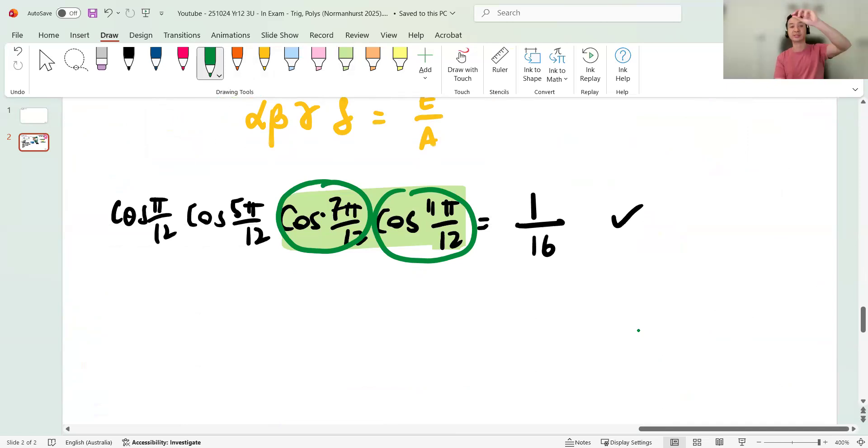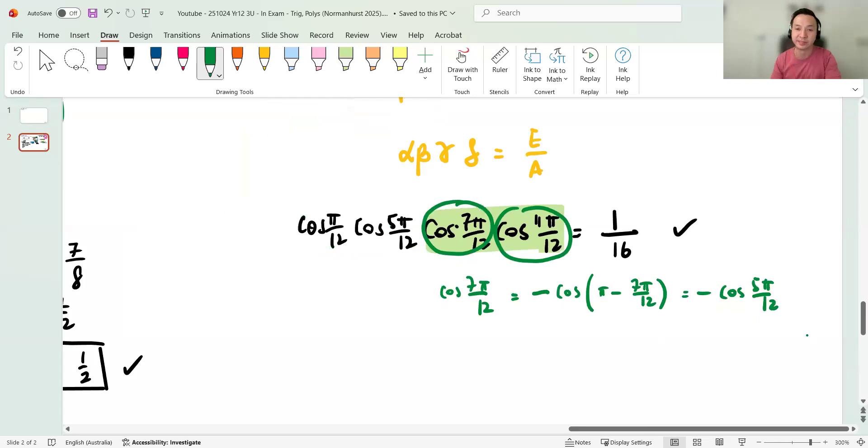Now you guys know, because 0 to pi, that's 0 to 180. Anything bigger than pi on 2 is in the second quadrant. These guys are smaller, so they're good. These guys are bigger. So what they've done is they've said cos 7 pi on 12. In the second quadrant, it's pi minus 180. That's equal to negative cos of pi minus 7 pi on 12, which is negative cos 5 pi on 12. Yeah, in the second quadrant. And similarly, cos 11 pi on 12, also in the second quadrant, is equal to negative cos pi minus 11 pi on 12, pi minus 180. And that equals to negative cos pi on 12.